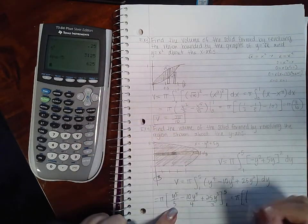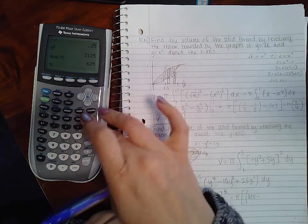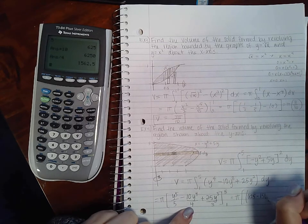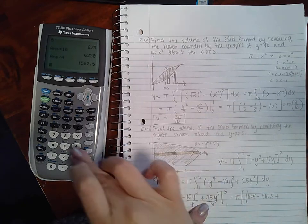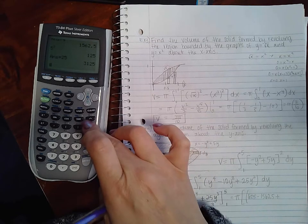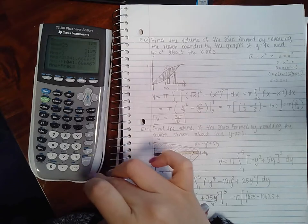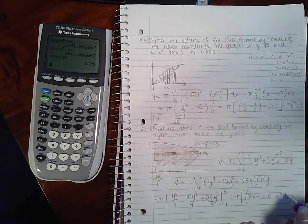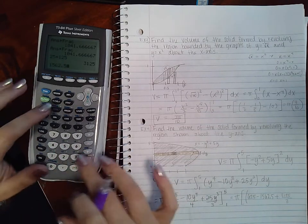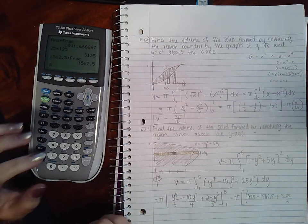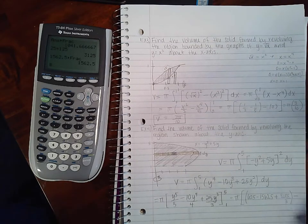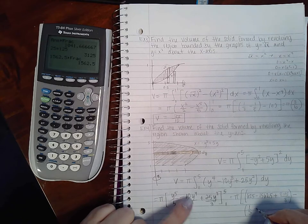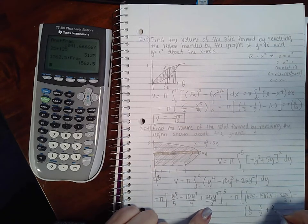And we're going to evaluate it from 1 to 5. 5 to the fifth divided by 5 is 625, minus 5 to the fourth times 10 divided by 4 is 1562.5, plus 5 to the third times 25 divided by 3. That's not a nice decimal, so I do have to use the fraction version. Let's see, 25 times 125 is 3125 over 3. We'll just leave that one alone. Minus, I'm running out of room here, so I'm going to put it over here on the side. So if I plug in one, I'm going to get one fifth minus 10 over 4, which is 5 over 2, plus 25 over 3.